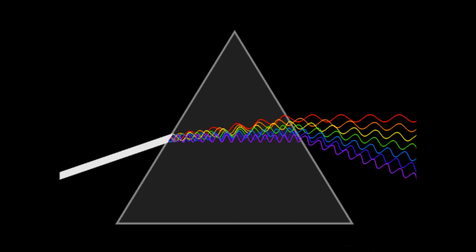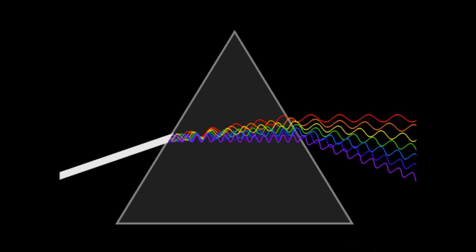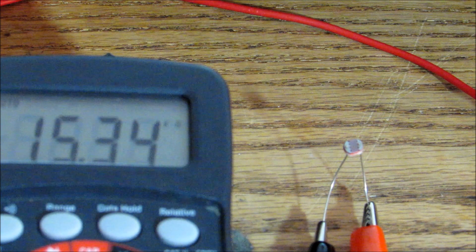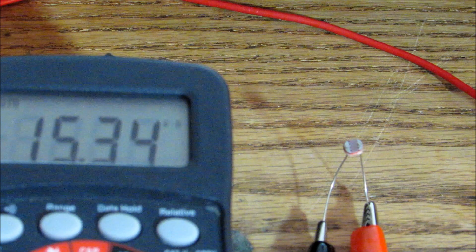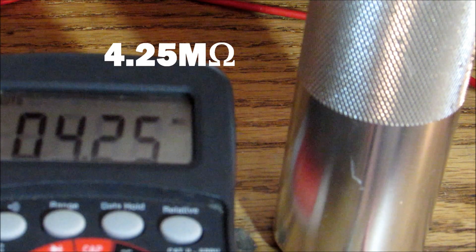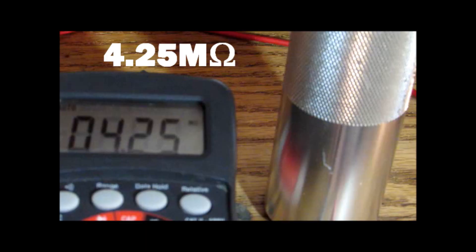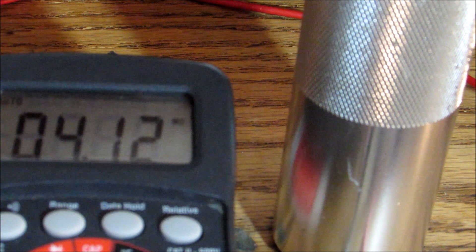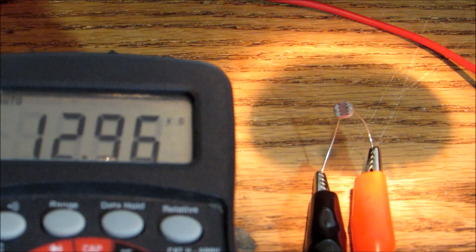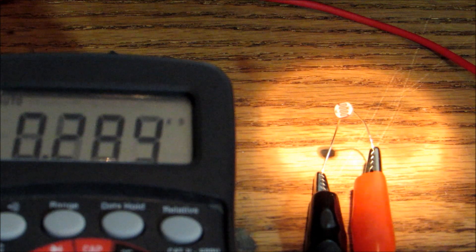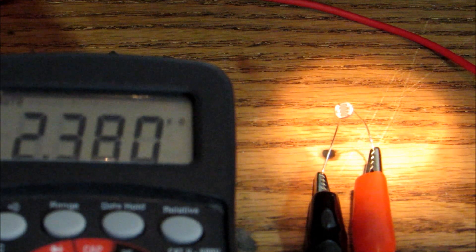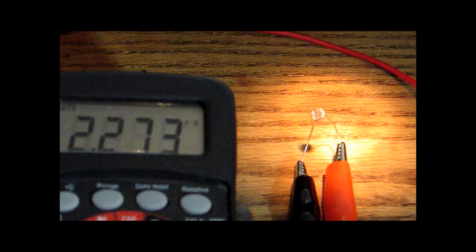Now let's take some resistance measurements given various lighting conditions. With just a desk light, we see a value of 15.34 kilo ohms. When we cover the photoresistor, we get a value of 4.25 mega ohms, which is relatively close to the dark resistance specified on the datasheet. In this case we did not fully shield the photoresistor from light, so we did not achieve the full 5 mega ohms. When the photoresistor is exposed to a flashlight, its resistance drops to about 2.27 kilo ohms.